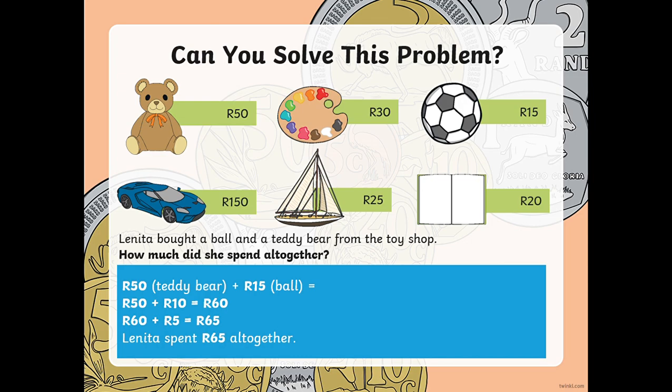This is how I would like you to set out your answers for the rest of this activity. So we're going to put 50 rand for the teddy bear plus 15 rand for the ball, equals. To work it out, we're going to say 50 rand and the 10 rand from the ball — so a 50 rand note and a 10 rand note will give us 60 rand. Then we bring down the 5 rand from the ball: 60 rand plus 5 rand equals 65 rand. Our sentence is: Lanita spent 65 rand altogether.